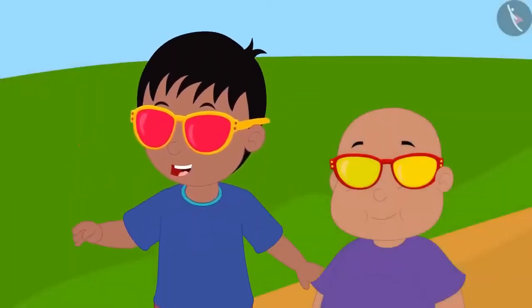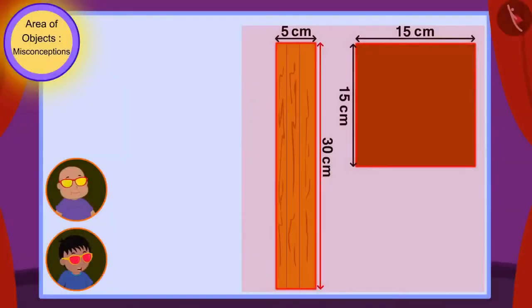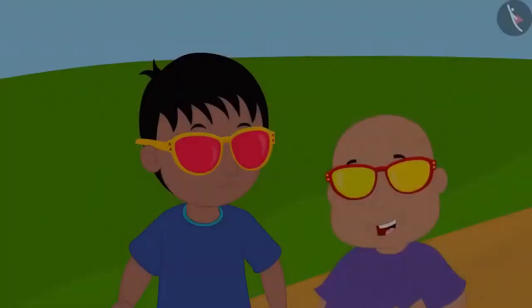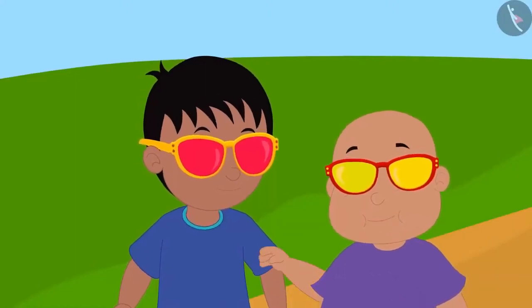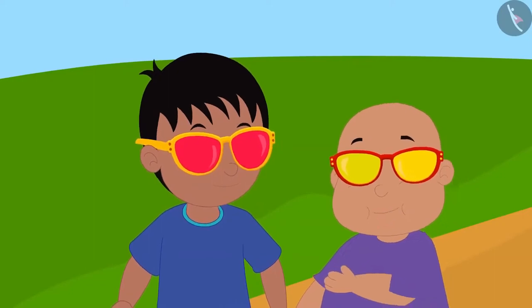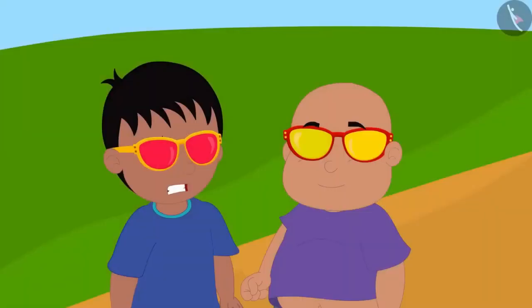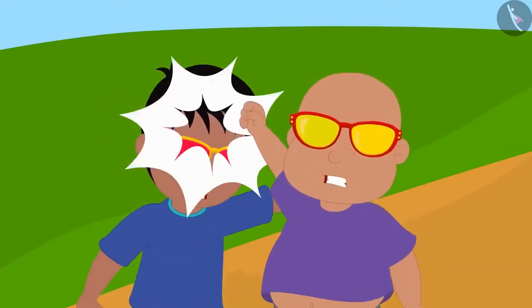Raju excitedly told Bablu that through his glasses he could see the measurements. The length of the longest side of the rectangular table is 30 cm, which is much more than the length of the square shaped table's edge of 15 cm. That means the rectangle shaped table is much larger than the square shaped table. But Bablu said it is not necessary that because the rectangular table's edge is more than the square table's edge, the rectangular table is larger. Raju did not think what Bablu said was true and both started quarrelling.